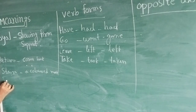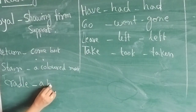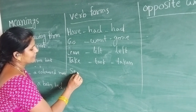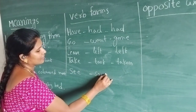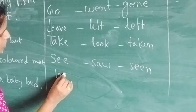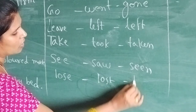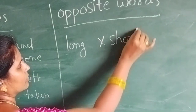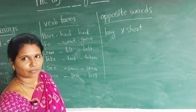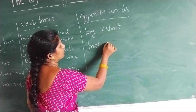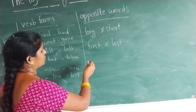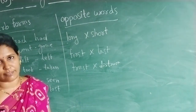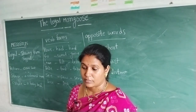Cradle — what is the meaning of cradle? A baby bed. Lose, lost, lost — these are irregular verb forms. Long and short are opposite words. First and last are opposites. Trust and distrust are opposites. These are the opposite words from that lesson.